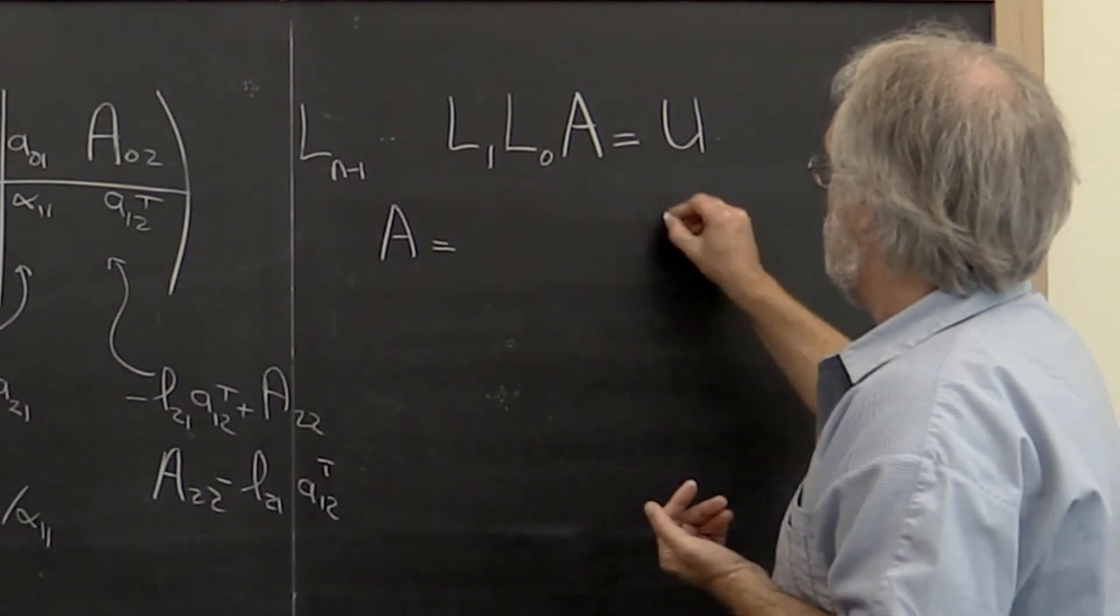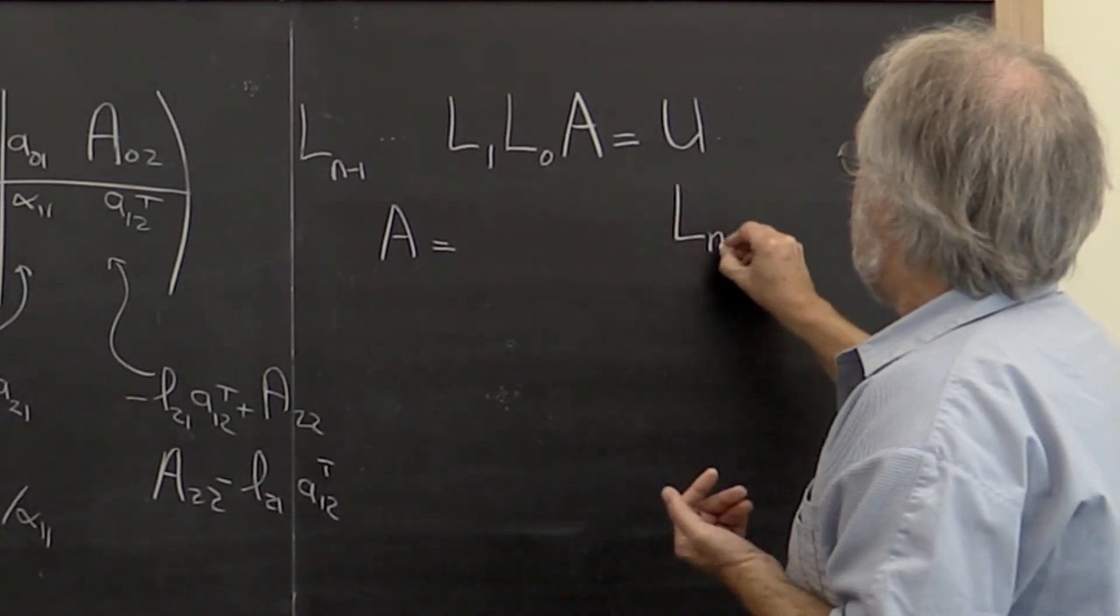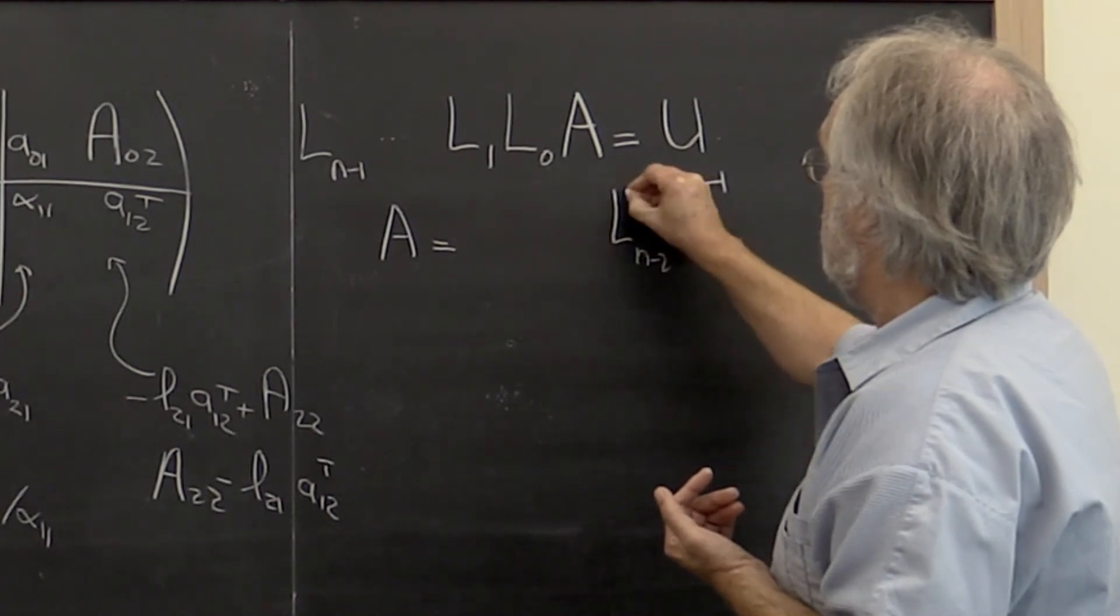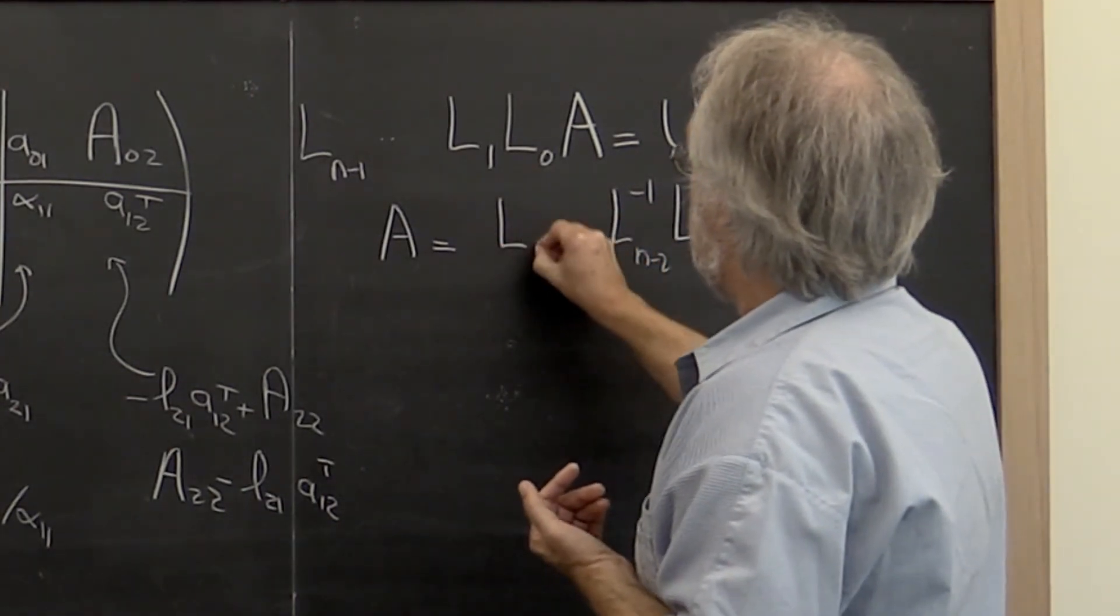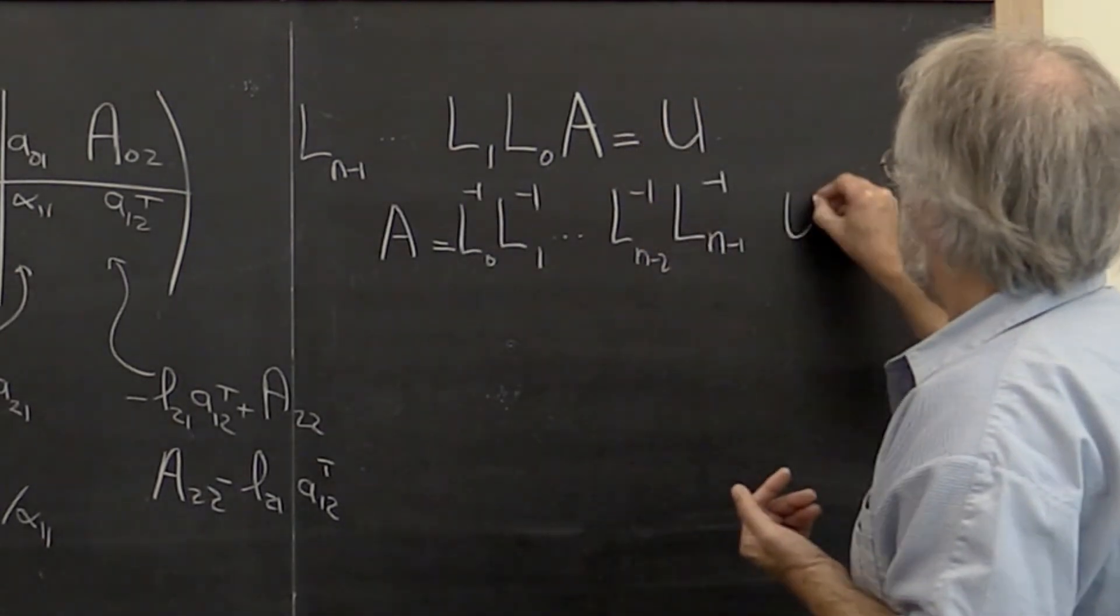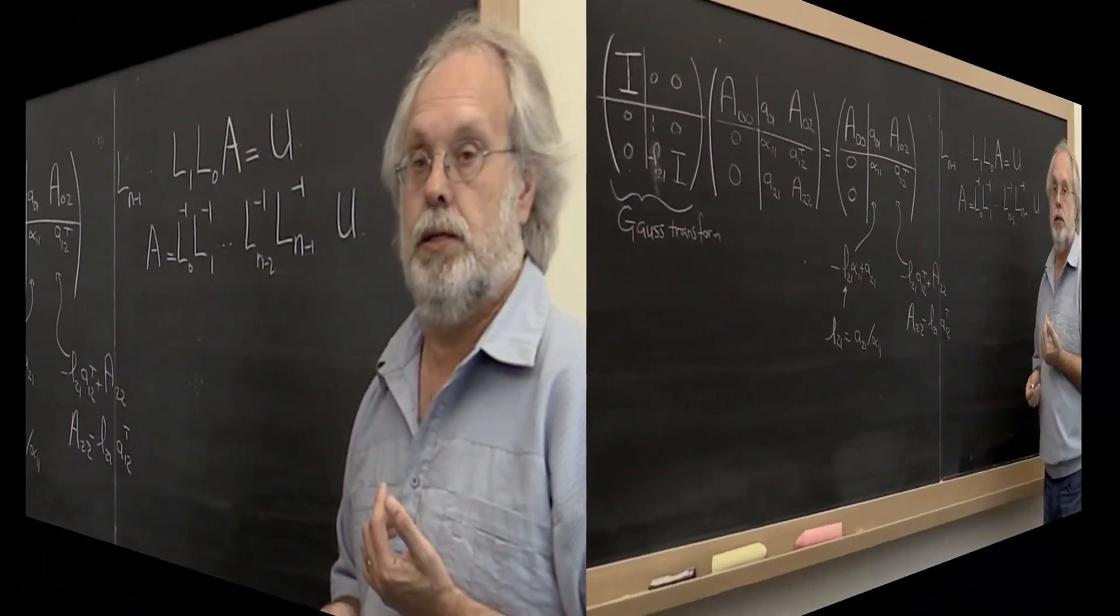What that means is that you can bring all of these different Gauss transforms to the other side and show that this is actually equal to Ln minus 1 inverse Ln minus 2 inverse all the way down to L1 inverse and then L0 inverse times the matrix U.